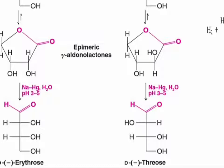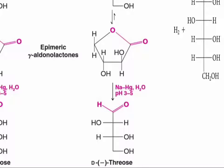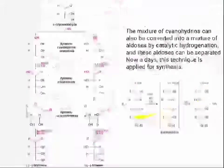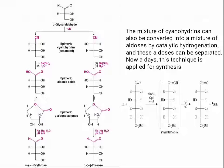If you react with sodium amalgam at pH 3 to 5, the lactone will be converted into an aldehyde group, and ultimately you will get erythrose and threose. The mixture of cyanohydrins can also be converted into a mixture of aldoses by catalytic hydrogenation, and these aldoses can be separated. Nowadays this catalytic hydrogenation technique is applied for synthesis.